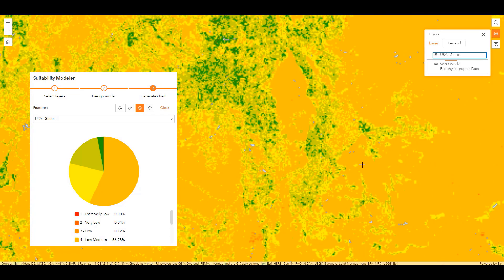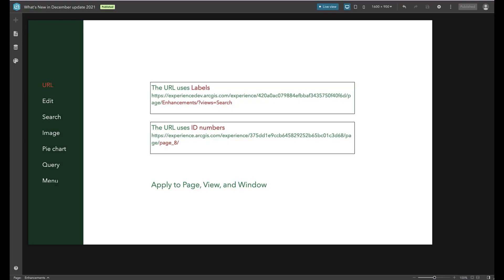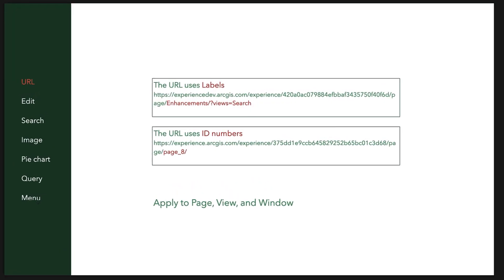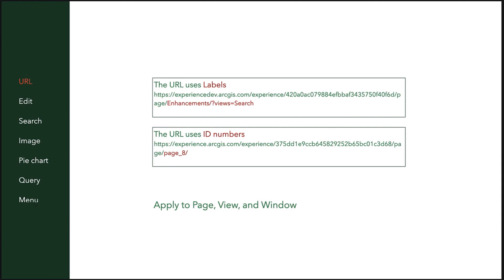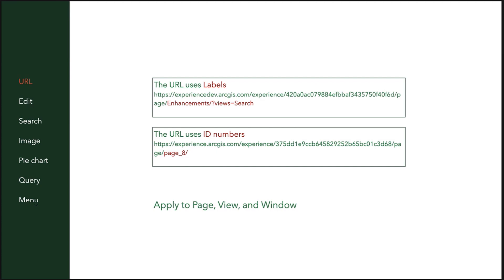Thank you for joining for this quick overview of the new Suitability Modeler widget in Experience Builder. Thanks, Eliza. In addition to new widgets, we have made improvements in the Builder and existing widgets. For URL, to help navigate the page, view, and window in a meaningful way, the app's URL now displays their labels instead of original ID numbers. You may have shared app links prior to this release and wonder if they will continue to work when you update and republish apps — the answer is yes, they will not be broken.